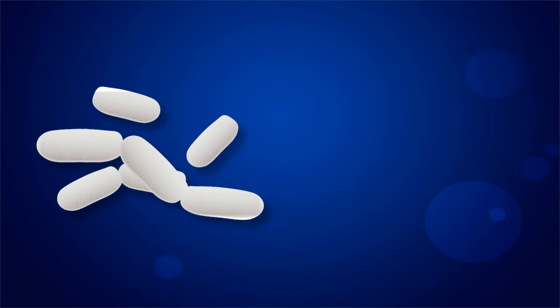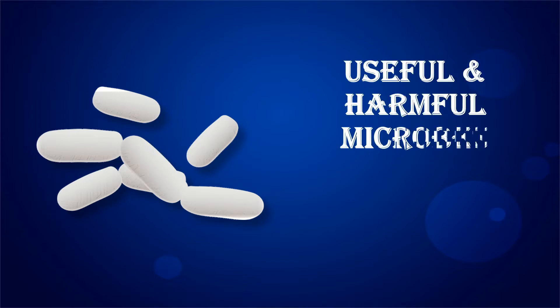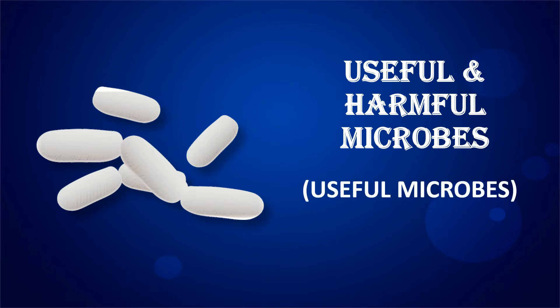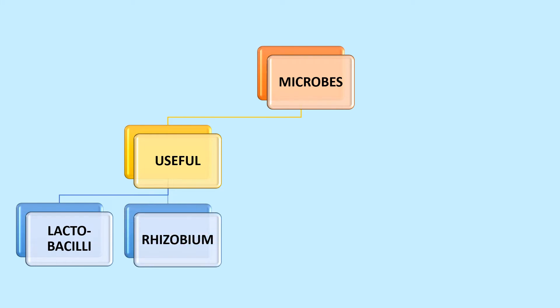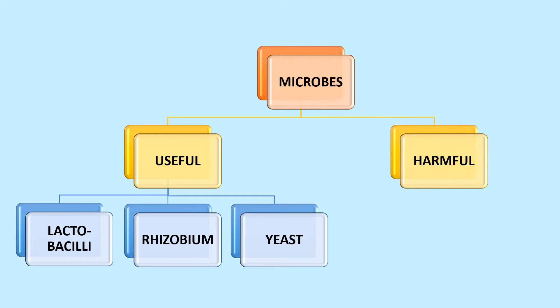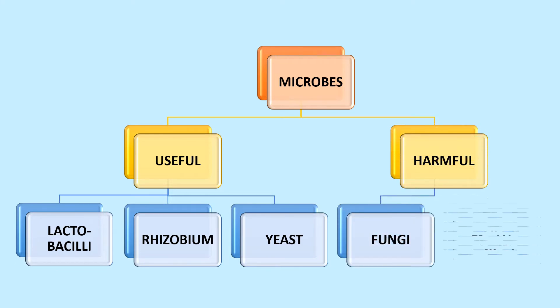Hello and welcome to another lesson in Science and Technology 2 called Useful and Harmful Microbes. In this video, we will only be studying about the useful microbes or microorganisms. Microbes can be classified as useful microbes; some examples are lactobacilli, rhizobium and yeast. There are also harmful microbes which could be fungi and clostridium.